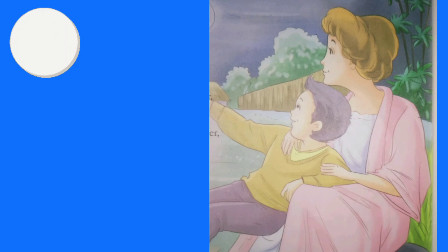So here you can see that the child is looking at the moon and he is speaking to his mother. And for him, the moon looks like a lamp in the air.